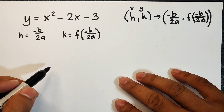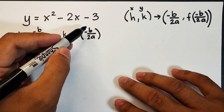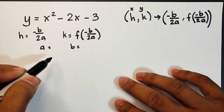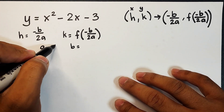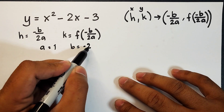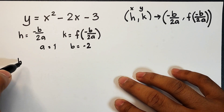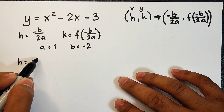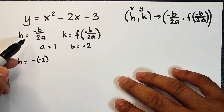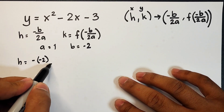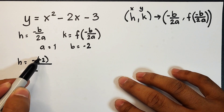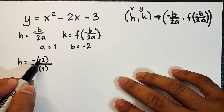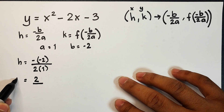Let's try finding the vertex of this given function y is equal to x squared minus 2x minus 3. First we will determine the value of a and b. The value of a is 1, your b is negative 2. To find the value of h, let us substitute using the formula negative b over 2a. That is negative times your b which is negative 2, over 2 times your a which is 1.